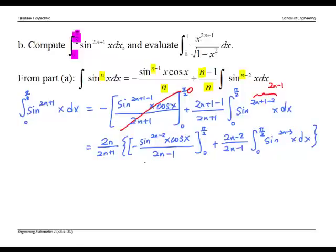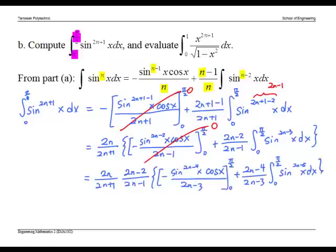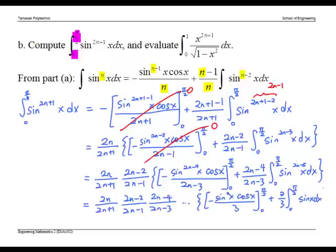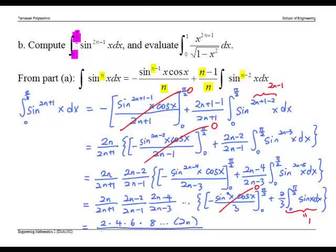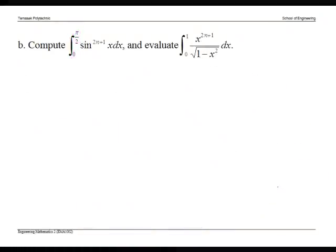Next we simplify again. If we keep going, we get this. This can be found to equal 1. So this becomes the product of even numbers up to 2n divided by the product of odd numbers up to 2n+1. So the first integral is this.